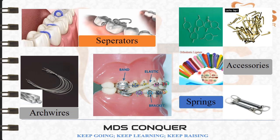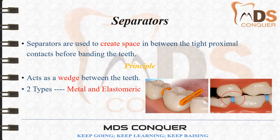The accessories of orthodontic appliances include lock pins, used with the Begg appliance technique; metal ligature wires; and elastomeric orthodontic ligatures, also known as elastic modules. These are used to ligate the arch wire with the slot of the brackets.